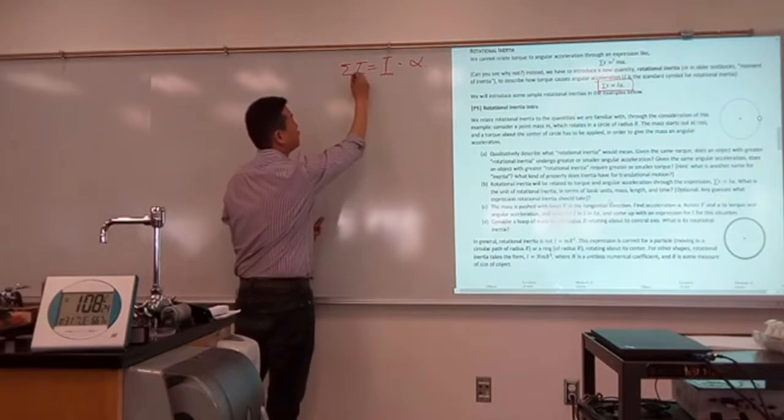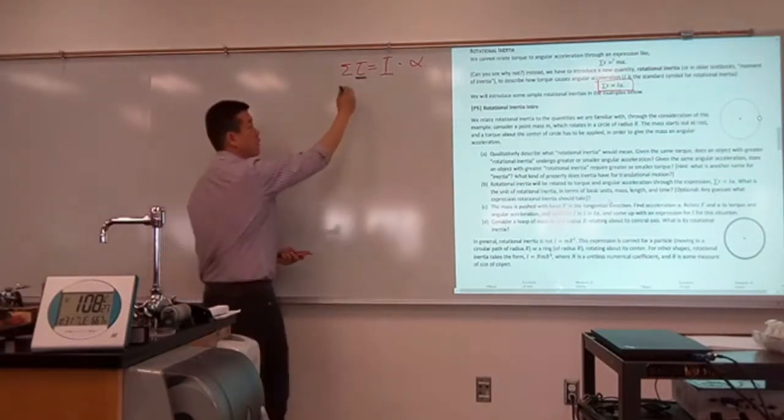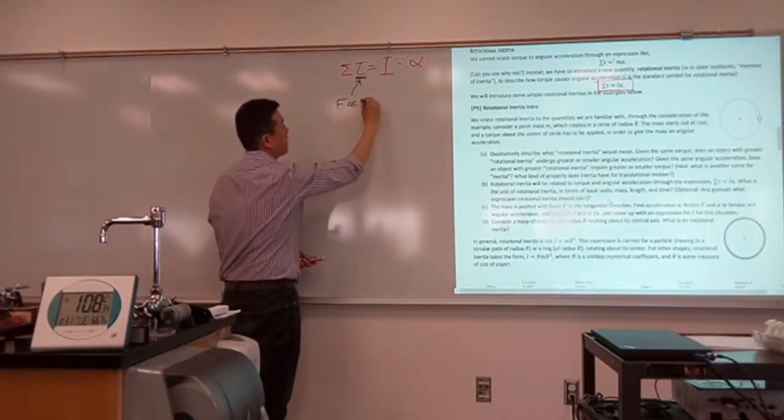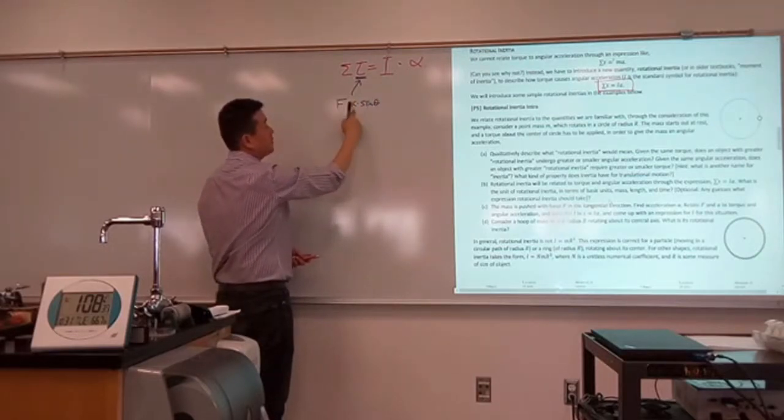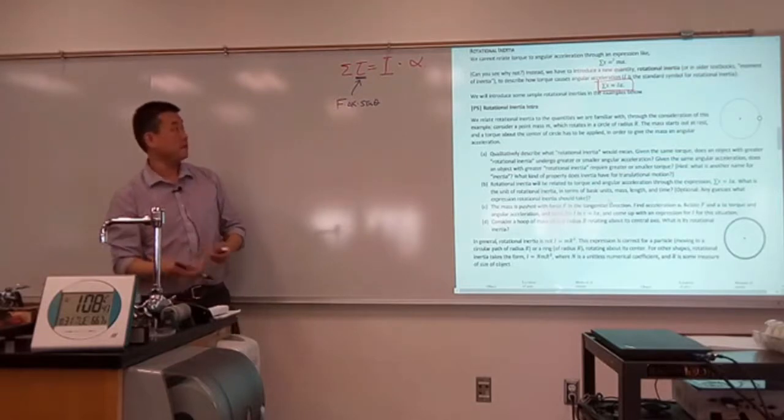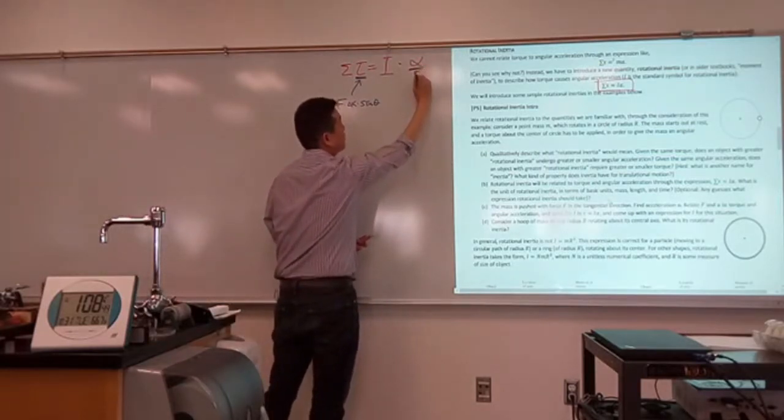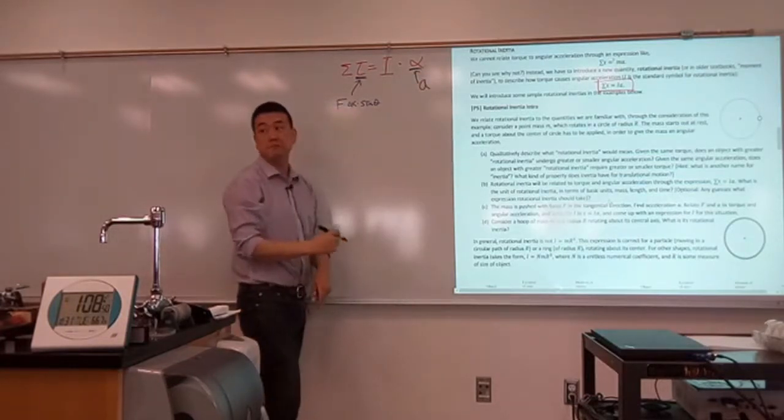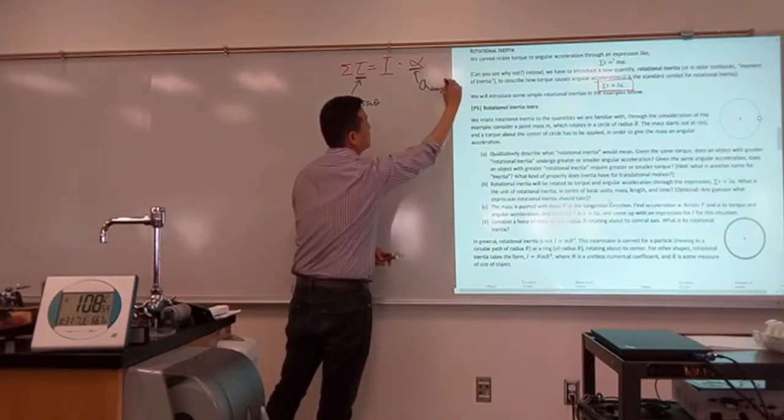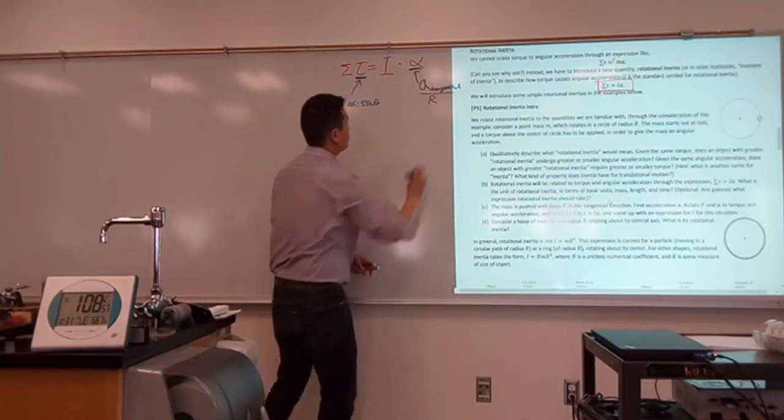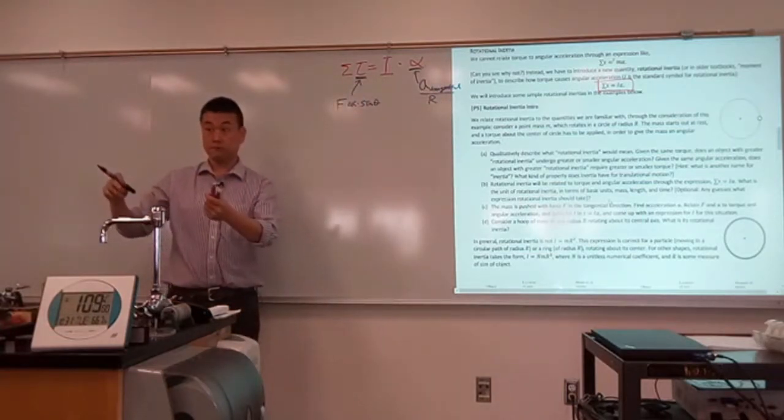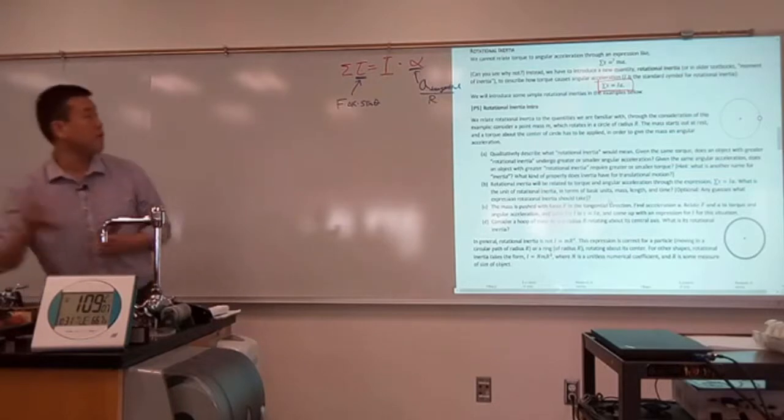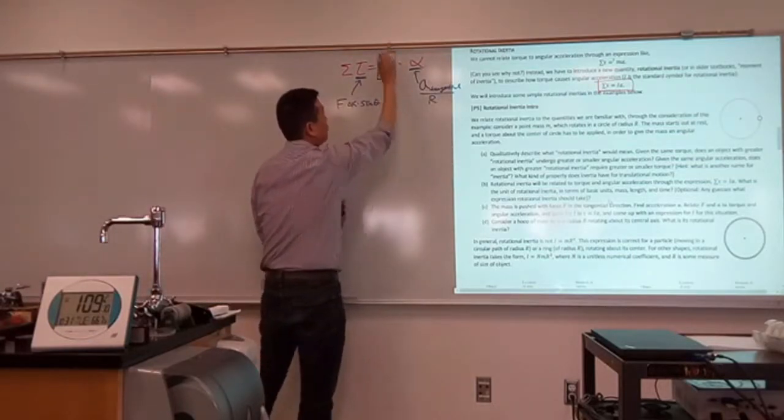With the net torque, we know how to calculate torque from force. Torque was calculated as force times some distance times sine theta, the angle between force and the displacement vector. And you guys know the angular acceleration. This would be related to the translational quantity. It would be the acceleration, or more precisely, the tangential acceleration, divided by the radius of the circle that it's going, right?